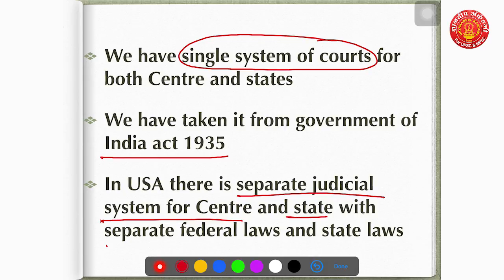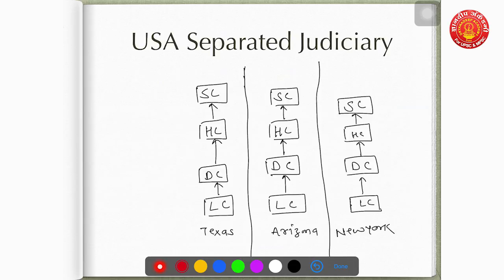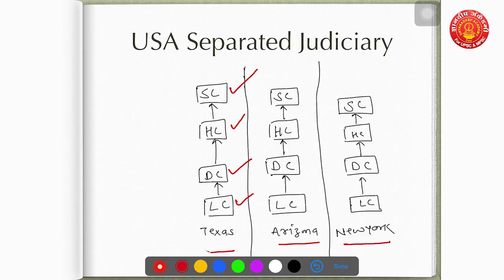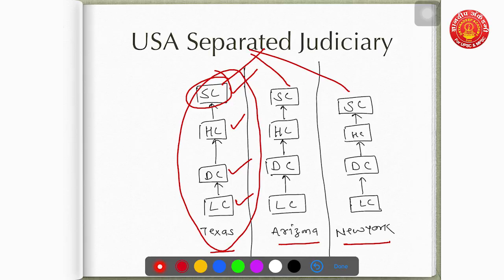In the USA, there is a separate judicial system for both center and state with separate federal laws and separate state laws. For example, in states like Texas, Arizona, and New York, every state has its own lower court, district court, High Court, and its own Supreme Court. An appeal from a court in Texas lies in the Supreme Court of that state only — it does not go to any federal court. Every state in America has its own separate judicial system.